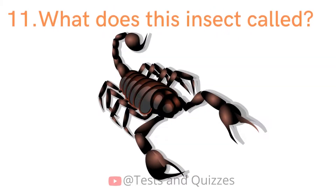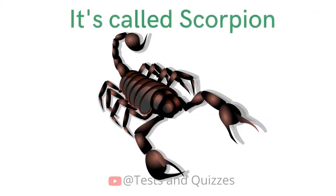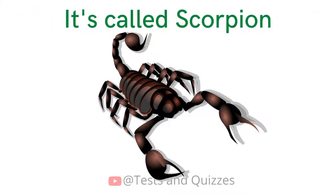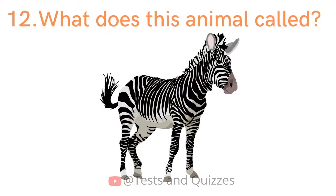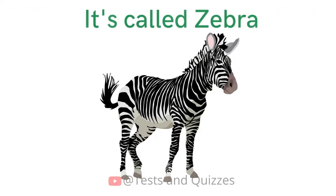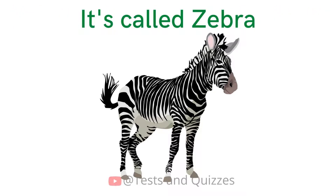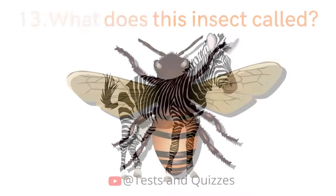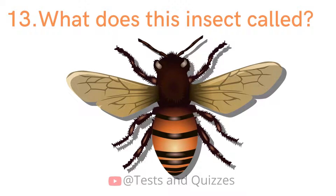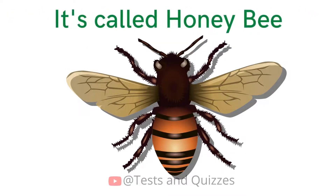What does this animal call? What does this animal call? It's called Zebra. What does this insect call? It's called Honey Bee.